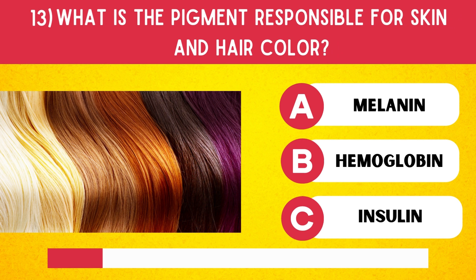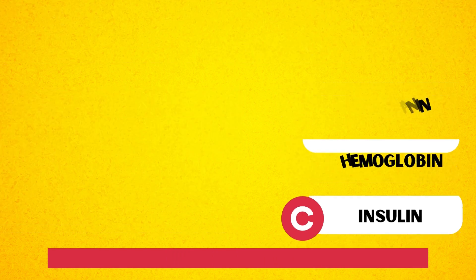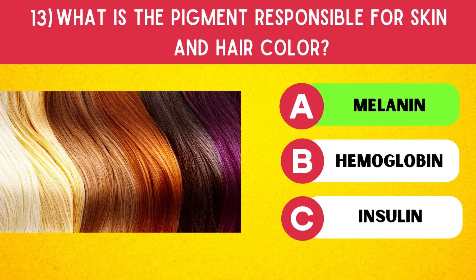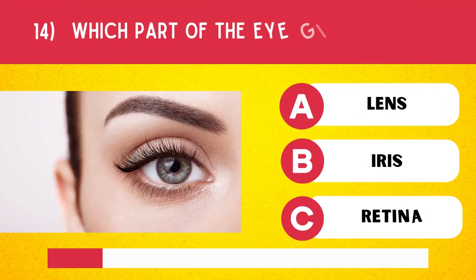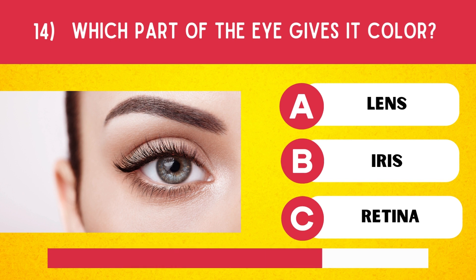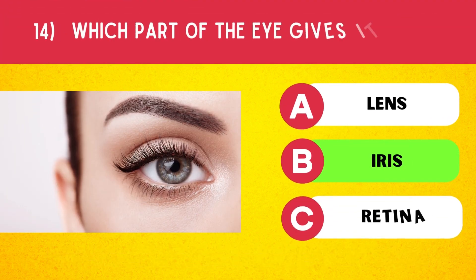What is the pigment responsible for skin and hair color? Melanin. Which part of the eye gives it color? Iris.